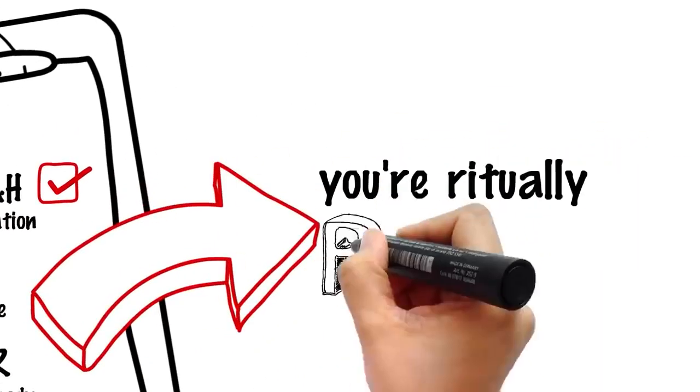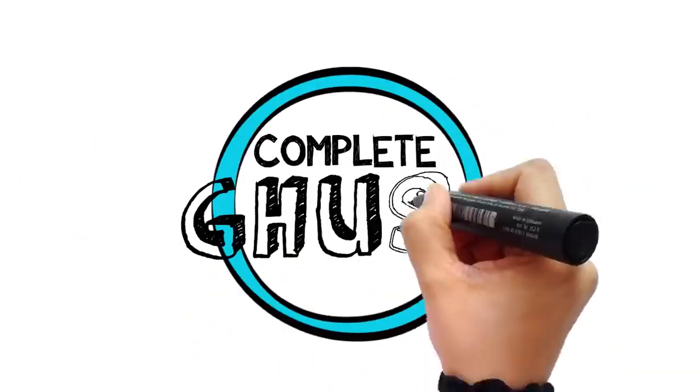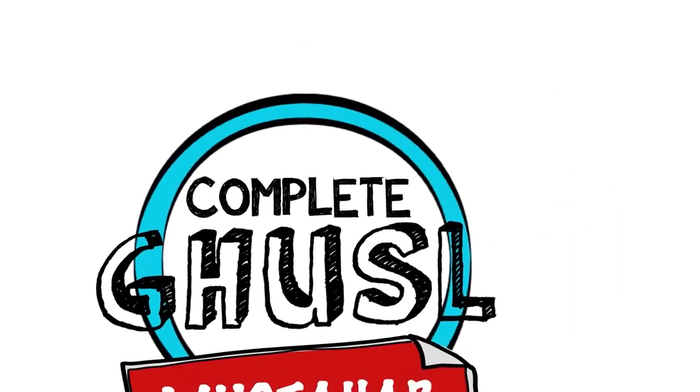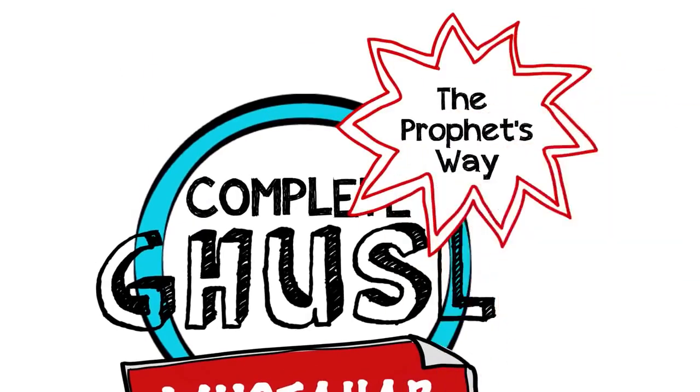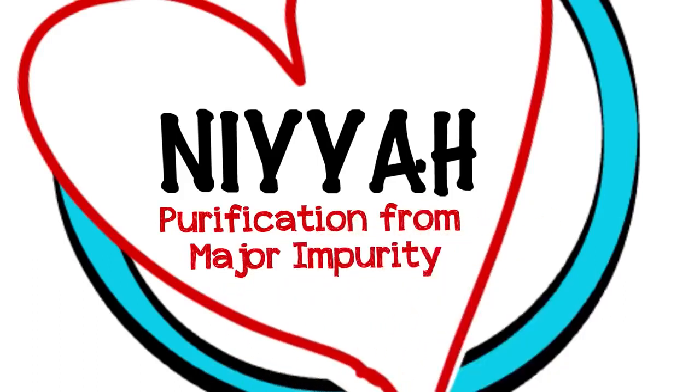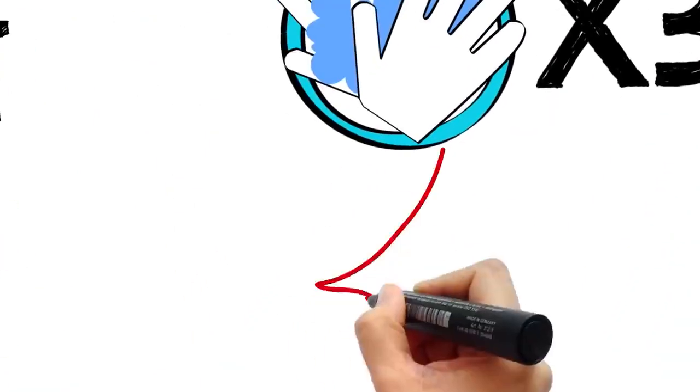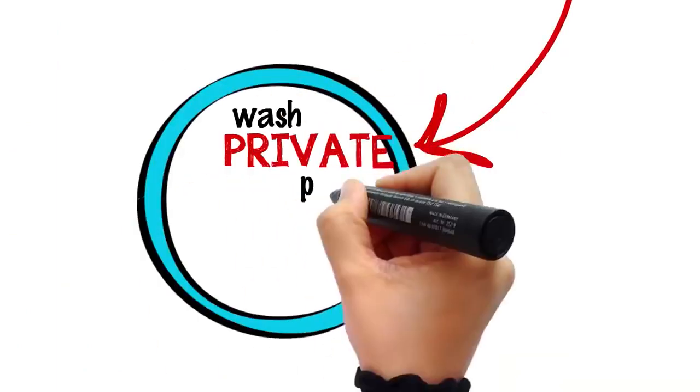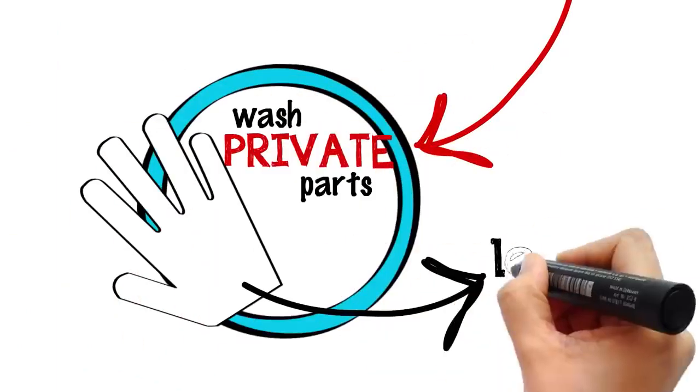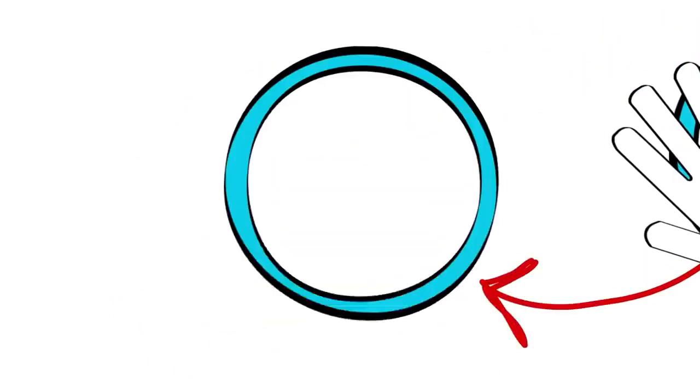As for the complete ghusl, and this is the mustahhab one, and it is how the prophet sallallahu alayhi wasallam took a bath. And this is how you do it: Begin with an intention to purify yourself from the major impurity, then say bismillah. Wash your hands three times, then with your left hand wash your private parts and anywhere else that is contaminated with traces of impurity. Then make a complete wudu just as you would for prayers.